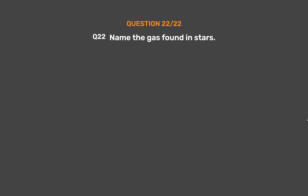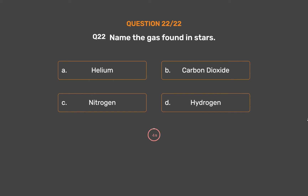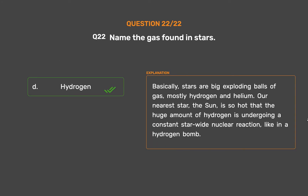Question number 22. Name the gas found in stars. Option A: Helium. Option B: Carbon dioxide. Option C: Nitrogen. Option D: Hydrogen. Stars are big exploding balls of gas, mostly hydrogen and helium. Our nearest star, the sun, is so hot that the huge amount of hydrogen is undergoing a constant star-wide nuclear reaction, like in a hydrogen bomb.